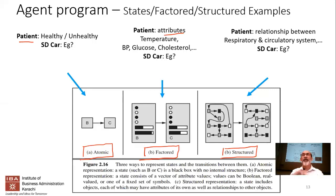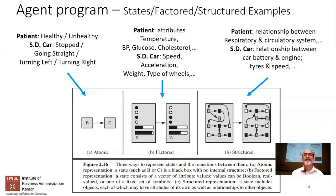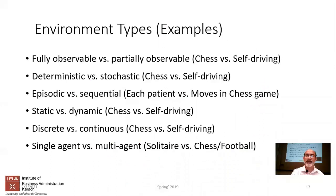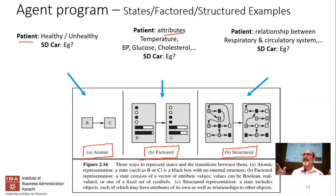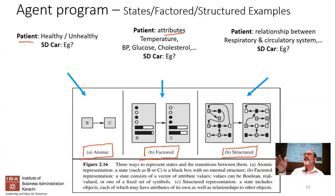All of AI today can be modeled by these three representations. For the self-driving car: the atomic case is the four states we've seen; the factored case adds additional features like battery, tires, fuel. What would be a structured representation of the self-driving car environment?